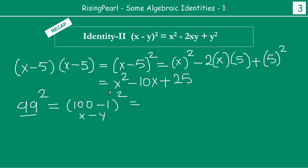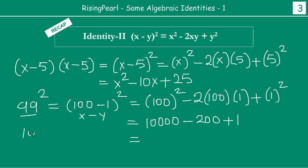You can see this can be treated as x minus y whole square. So that will be 100 square, which is your x square, minus 2 times x is 100, y is 1, plus y square which is 1 square. So 100 square will be 1 and then 4 zeros, which is 10,000, minus 2 times 100 times 1 is 200, plus 1. So if you solve this, you will get 10,000 minus 200 plus 1, which gives you 9,800 plus 1 is 9,801. So this is one numerical application of this kind of identity.